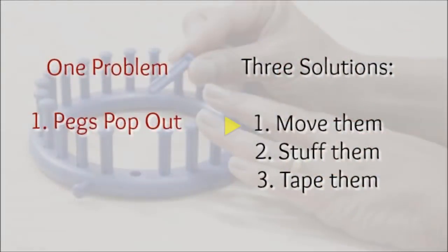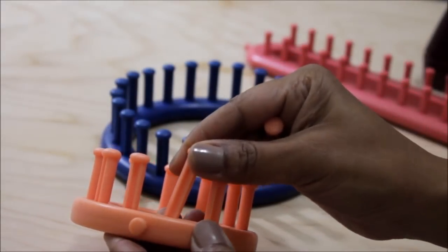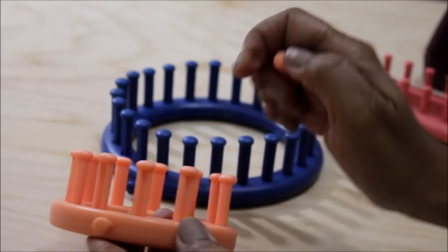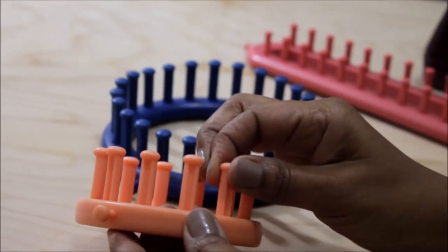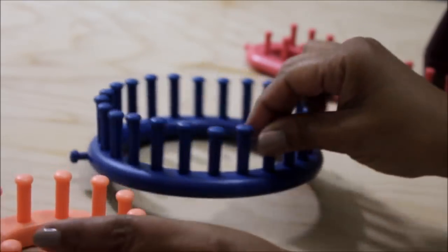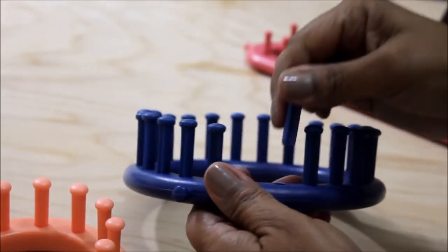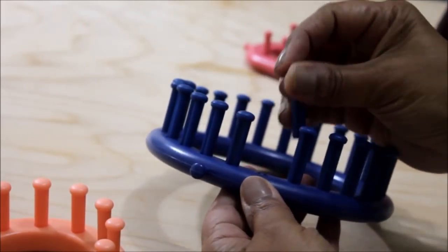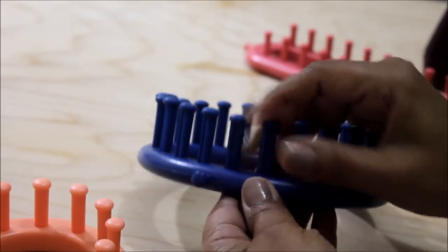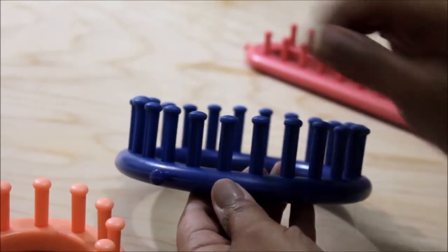So here are three different temporary solutions. One is to move the pegs. Believe it or not, sometimes all it takes is just taking a peg off of its existing socket and move it to a different one. Sometimes it's just you overuse them and you put them in the same ones over and over again. If you just move your pegs around in some cases that's enough to get them secure.